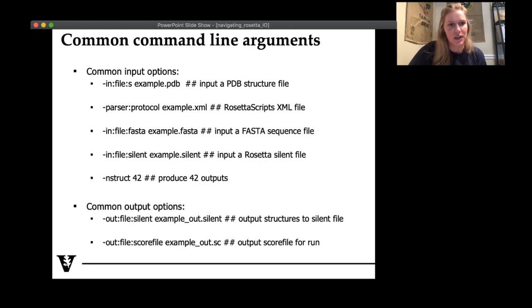So some common command line arguments, we have dash in:file:s, which you've already seen, that's how you input a PDB, which I've named here example.pdb. You have parser:protocol, you'll be using this a lot. This is for Rosetta scripts XML files. So what I've named example.xml. Input sequence, input that silent file that we just talked about on the last slide. And then your nstruct, telling Rosetta how many output files you want to produce. And I put 42 here, but you can obviously choose whatever number is suitable for what you're doing. And then a couple output files. You can output things as silent files and also tell Rosetta the name of the score file that you want. So I've named that output example_out.sc.